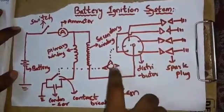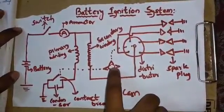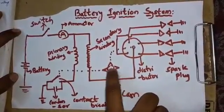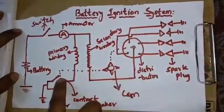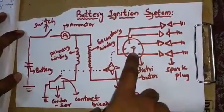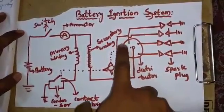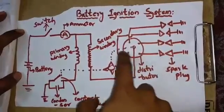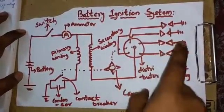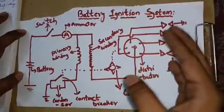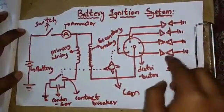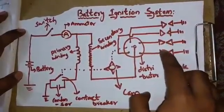When the cam is rotated as required, it operates the contact breaker. The current is then passed through the distributor, which is connected to the spark plugs. When this current passes through the spark plugs, it ignites the air-fuel mixture and thus produces the spark required for ignition.